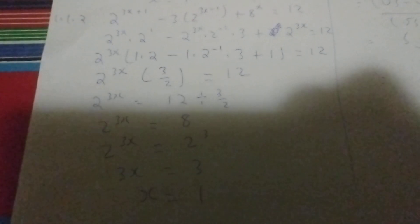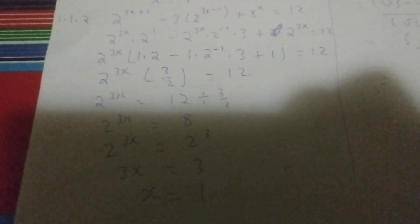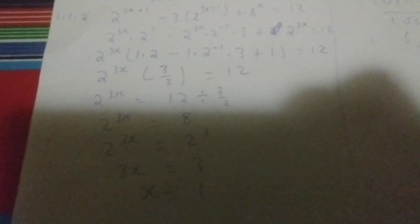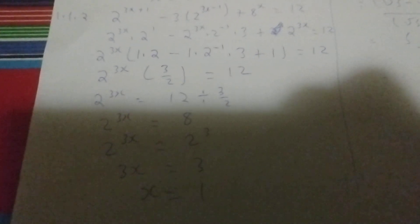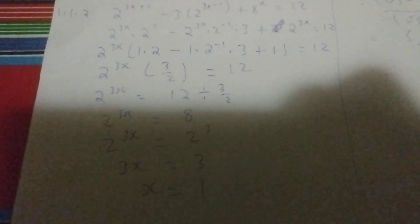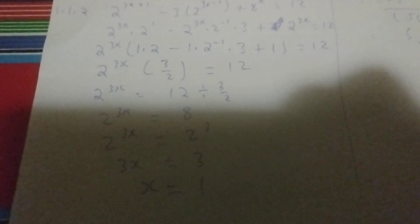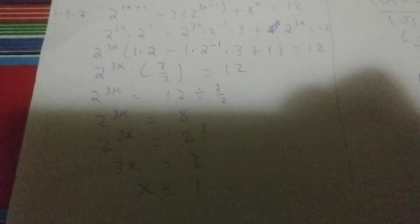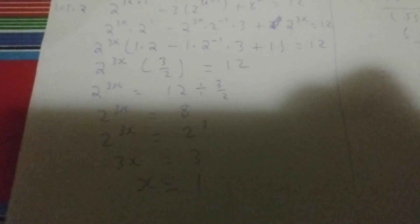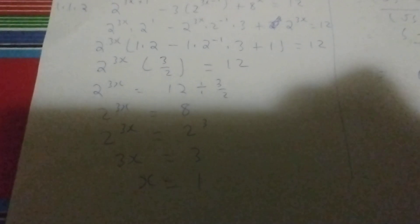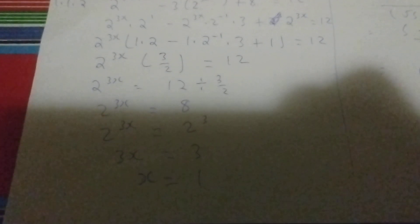When you change 8, it becomes 2 to the power of 3. Therefore, equating the exponents, we're left with 3x equals 3, and dividing both sides by 3, the answer becomes x equals 1.